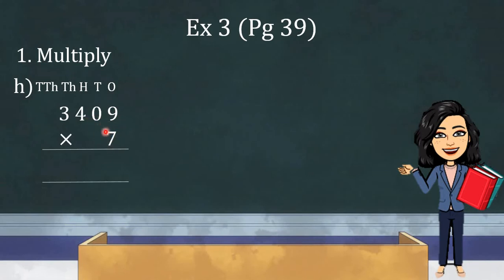And, we are going to start the multiplication from 1's place. And, we will write 7 at 1's place because it's one digit number. So, let us multiply. 7 times 9 is 63. So, we will write 3 at 1's place and we will carry 6 to the 10's place.